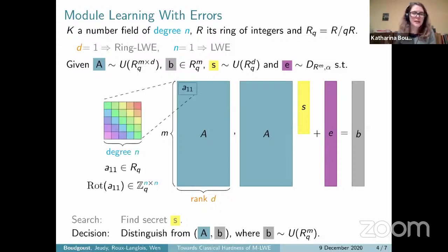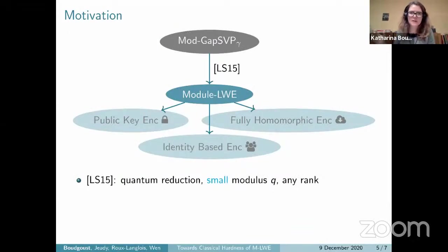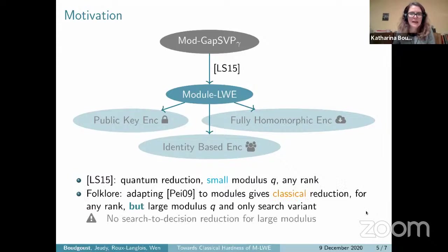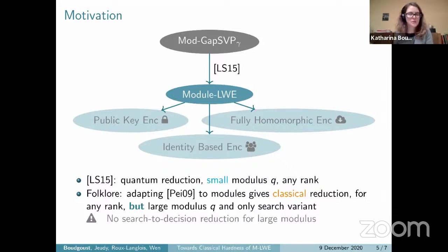When rank equals one, this is the ring LWE problem. When degree equals one — R equals the integers — this is the standard LWE problem. For general degree N, every entry in the matrix hides a structured matrix of dimension N×N over Z_q. Longlois and Stille in 2015 gave a quantum reduction from the approximate gap shortest vector problem to module LWE, allowing small modulus and any rank. The quantum reduction was unsatisfactory, so a classical reduction was sought. It was folklore that adapting the Peikert paper to the module setting gives a classical reduction for any rank, but with a large modulus and only the search variant.